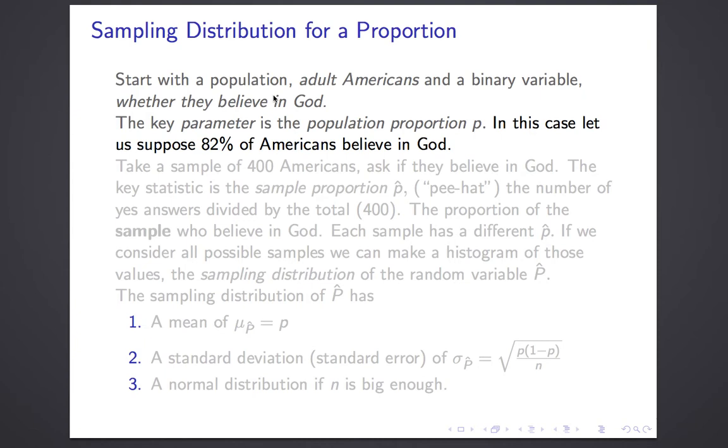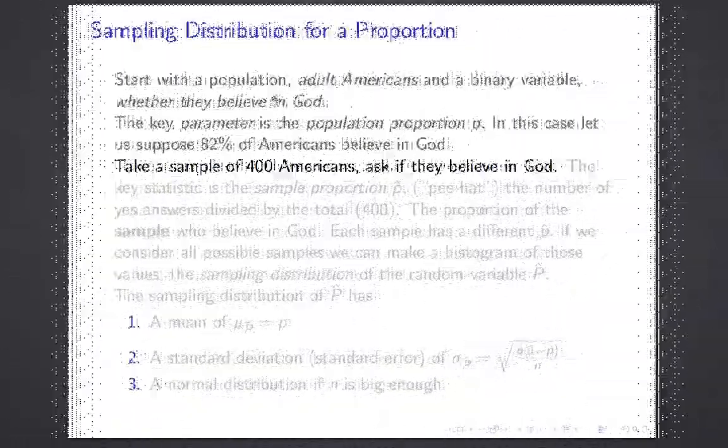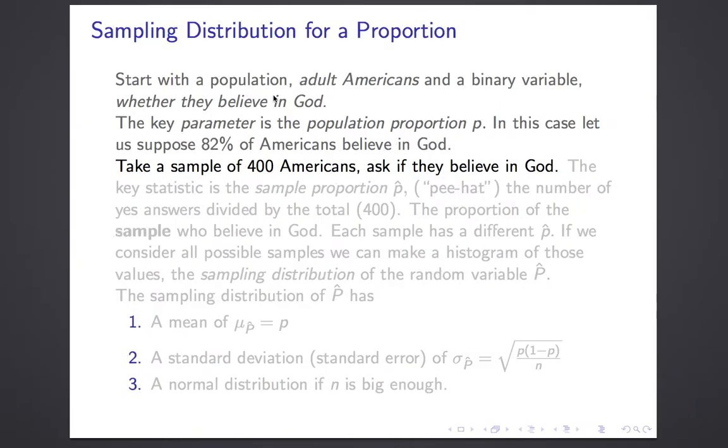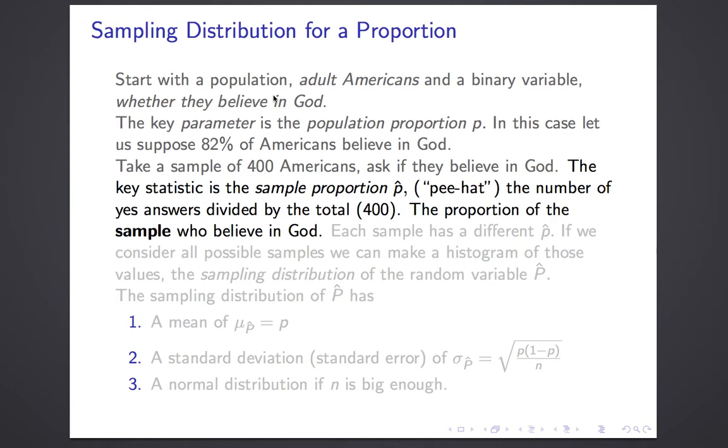Now I want you to imagine taking a sample, let's say a sample of 400 Americans, and ask them if they believe in God. The key statistic that we would be interested in is the sample proportion, and that's generally called P-hat, P with a little carrot over top of it. That's the number of yes answers divided by the total. Here's a simple but fundamental point: each sample has a different P-hat.